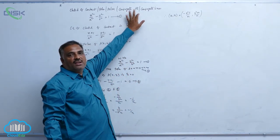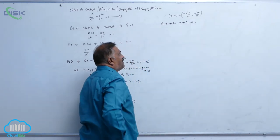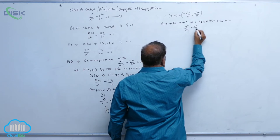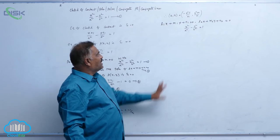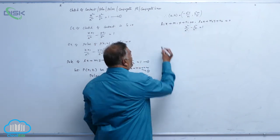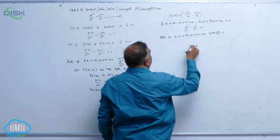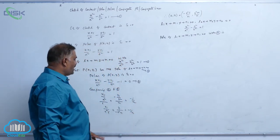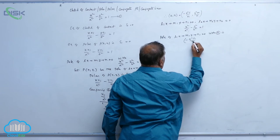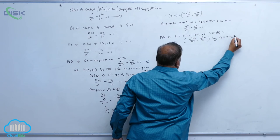Now we will derive the condition for lines to be conjugate. Consider l1x plus m1y plus n1 equal to 0 and l2x plus m2y plus n2 equal to 0 with respect to the standard hyperbola x square by a square minus y square by b square equal to 1. If these two are conjugate lines, the pole of the first line lies on the second line. The pole of l1x plus m1y plus n1 equal to 0 with respect to the hyperbola is (minus a square l1 by n1, b square m1 by n1), and this lies on l2x plus m2y plus n2 equal to 0.